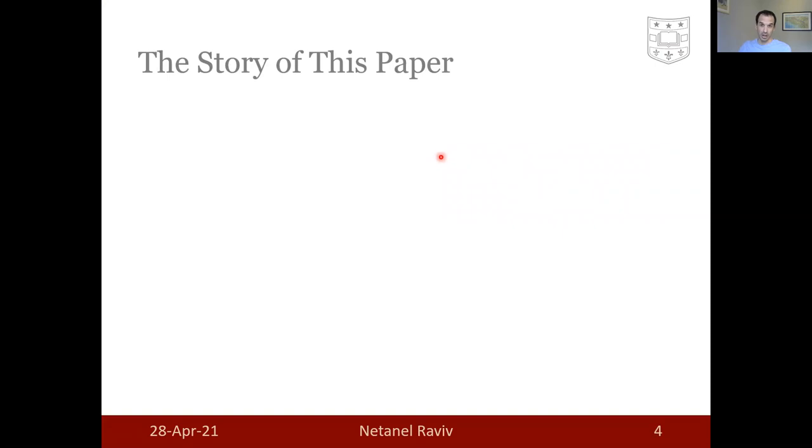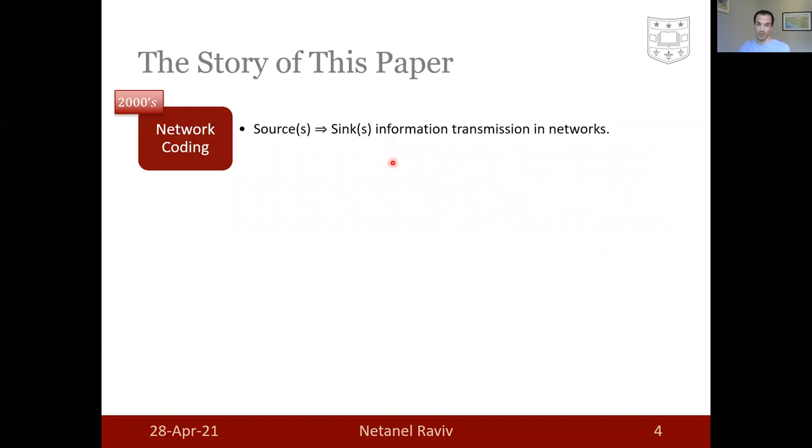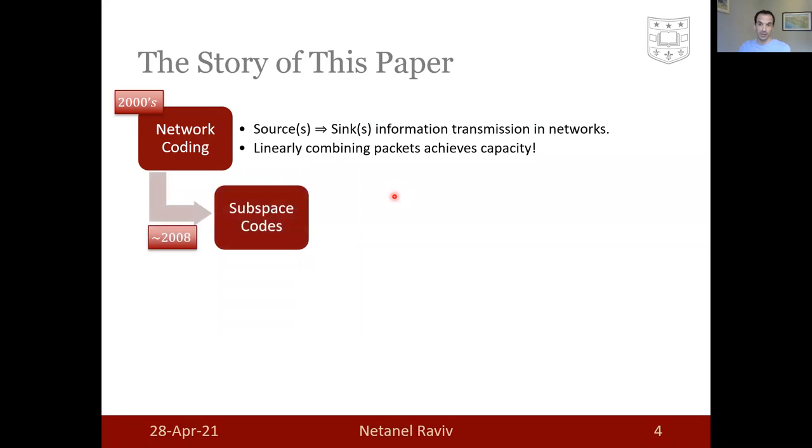A few words about how the research of Sidon spaces came about. In the early 2000s, the hot topic in the coding theory community was network coding. This topic discusses information transmission in networks from multiple sources to multiple sinks. And the surprising result there is that linearly combining packets in intermediate nodes can achieve the capacity of the network. This results in interest in so-called subspace codes. A subspace code is a set of subspaces of the extension field F_q^n over the base field F_q, such that any two have low dimensional intersection.